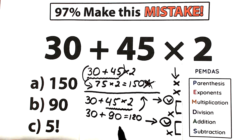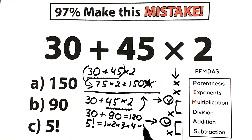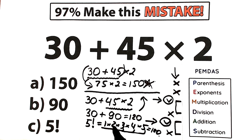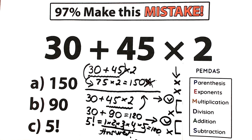Our correct answer is 120. Looking at the options, option C involves 5 factorial. 5 factorial is the product from 1 to 5: 1×2=2, 2×3=6, 6×4=24, and 24×5=120. So this is a tricky question because of the factorial — option C equals 120, which matches our answer. So option C is the correct answer.